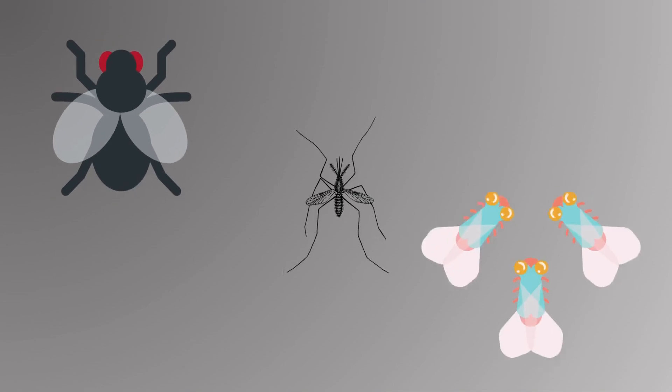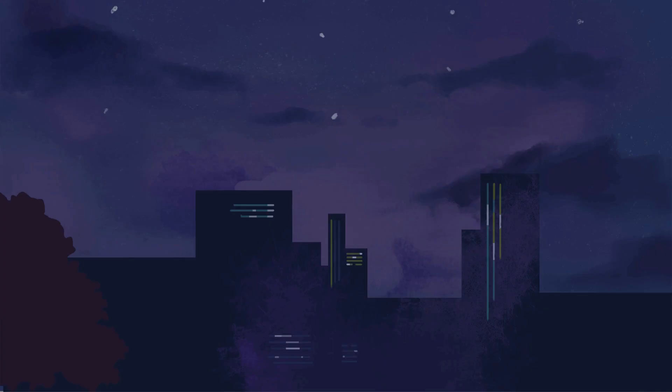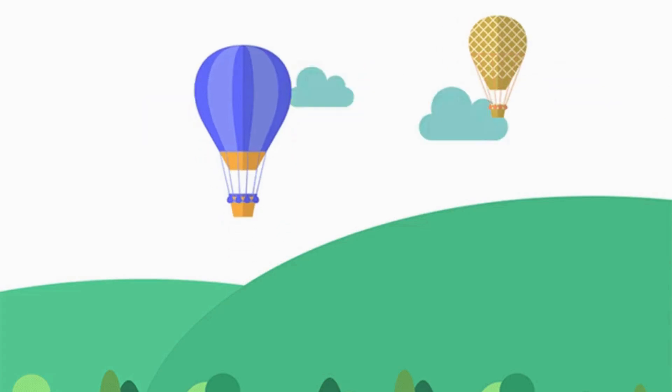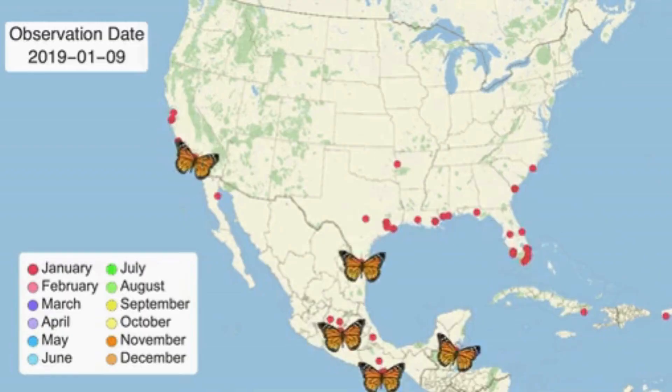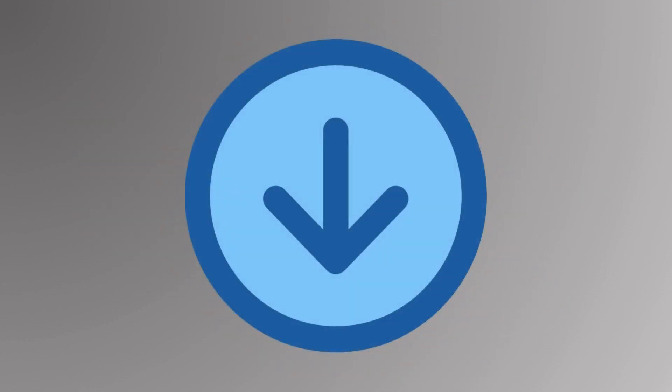Light pollution: Many insects are drawn to artificial lights at night, which disturbs their natural behavior like mating, migration, or hunting. Moths, for example, are fatally distracted by lights, which can reduce their population.